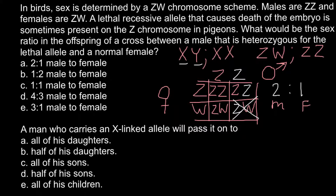Let's check our answers — this is going to be answer A: two males to one female. So this is going to be our ratio. Let's now move to the second question.